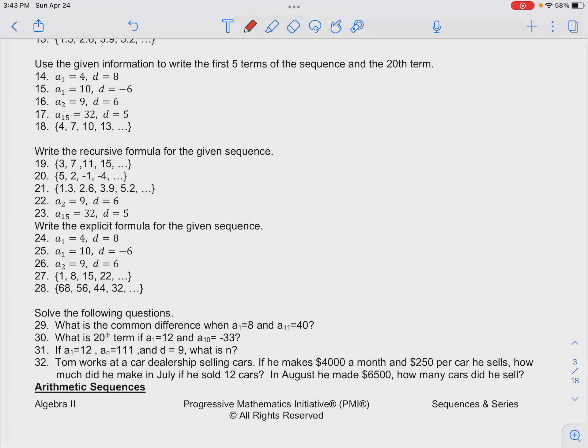In number 29 in your classroom for arithmetic sequences, we want to find the common difference of a sequence when we have a sub 1 is equal to 8 and a sub 11 is equal to 40. So we have 8 and then a bunch of numbers and then the 11th term here is 40.